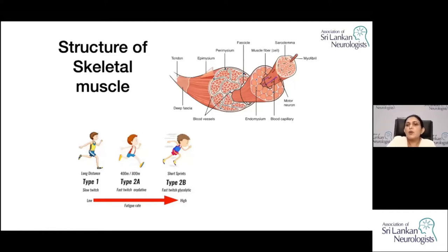Type one fibers are the slow twitch fibers, seen mainly in long distance runners. Type two fibers are fast twitch but fatigue easily. There are three subtypes of type two fibers: 2a, 2b, and 2x.